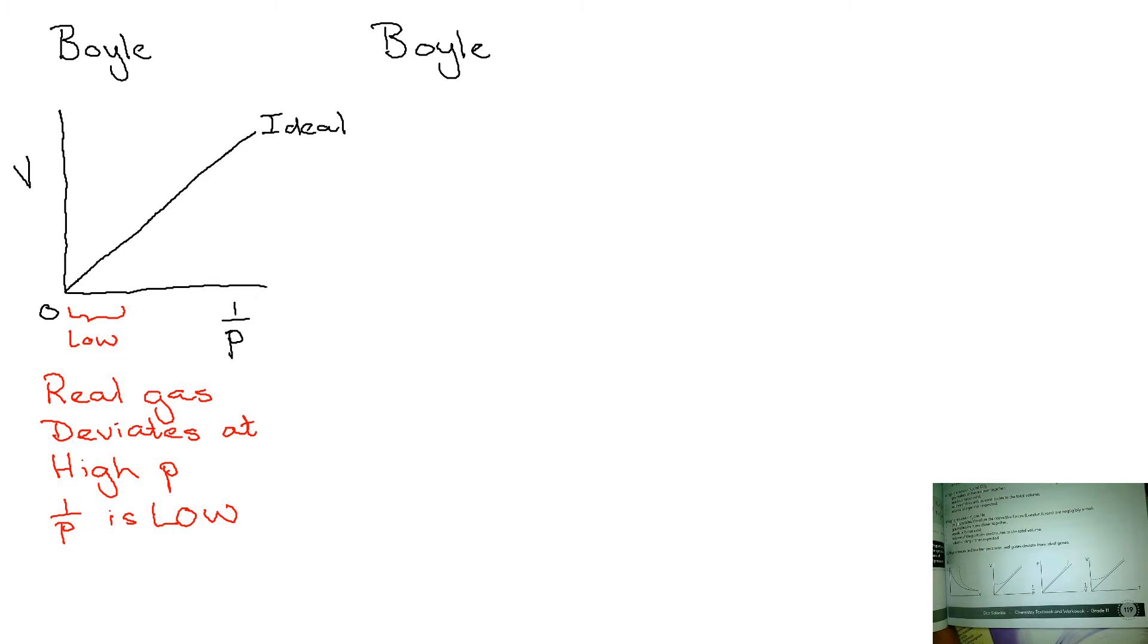Now, what do we know? We know that the real gas has volume. The particles have volume. And we know that when the pressure is very high, the 1 over P is very low. And that at high pressures, the volume will not decrease as expected. So this graph deviates from the ideal gas graph line like that.